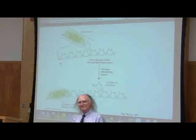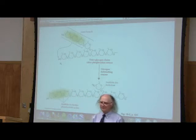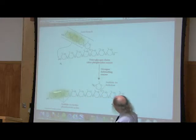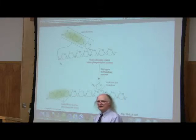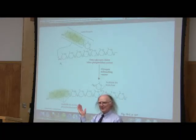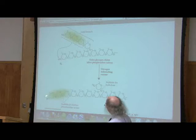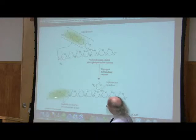But what about that remaining piece? Now this whole thing that's left behind — notice there are no branches in here. What is going to attack it? Glycogen phosphorylase. So glycogen phosphorylase now says, 'I like this,' and it starts chewing in from the end.